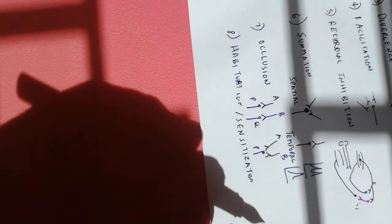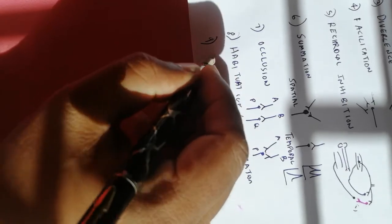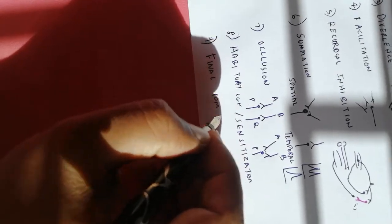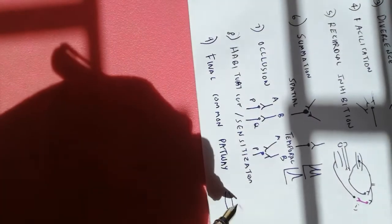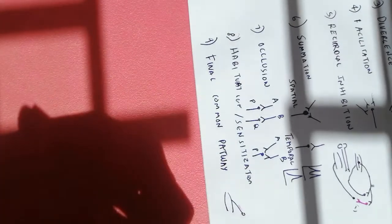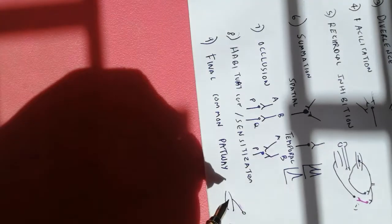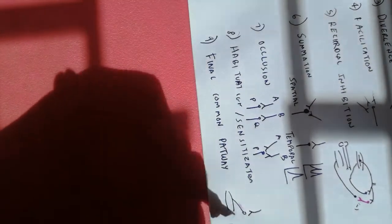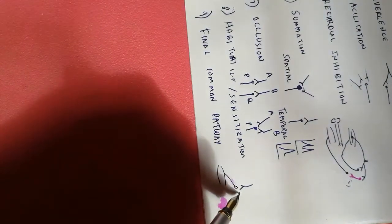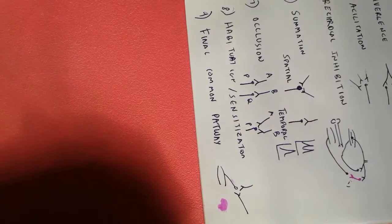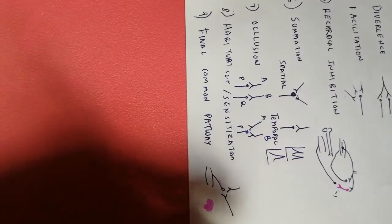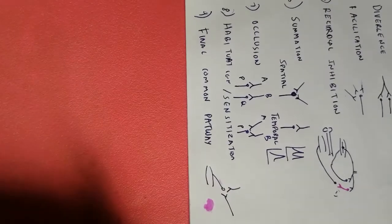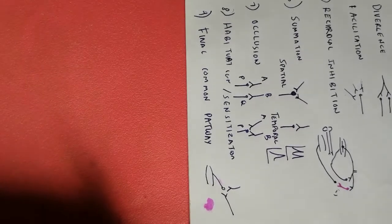Each time the reflex gets stronger. The final concept is the final common pathway, which has also been asked in physiology exams. From the different reflexes we study, the lower motor neuron is the one that supplies the muscle. Whether it's a stretch reflex or an inverse stretch reflex, it has to go through the lower motor neuron. So the lower motor neuron is the final common pathway through which all motor reflexes are controlled.